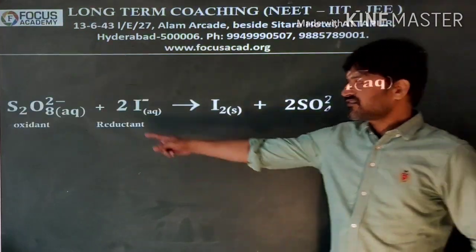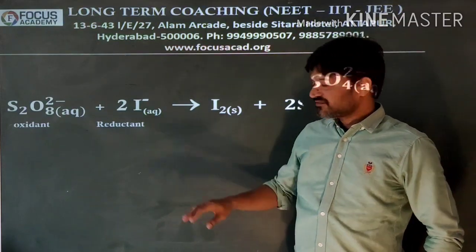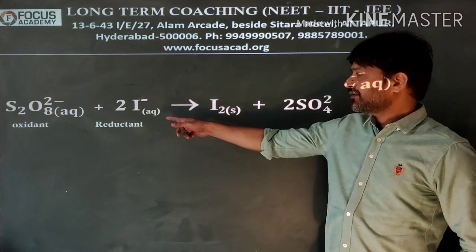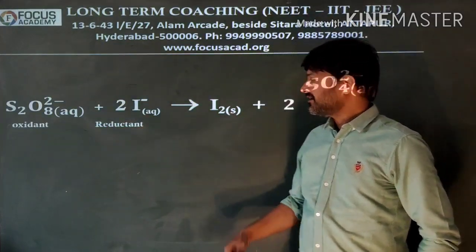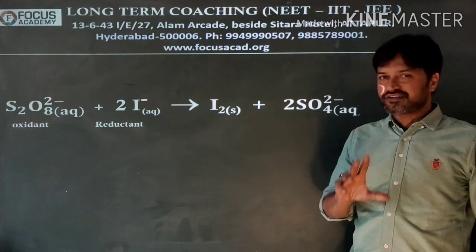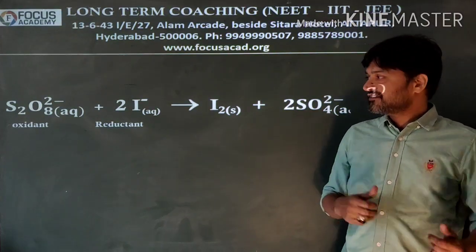So here our oxidant is peroxidisulfate and the reductant, the species which is going to get oxidized, is iodide. Iodide is getting oxidized to iodine and peroxidisulfate is getting reduced to sulfate. This is the reaction I want to emphasize the use of catalysts in.